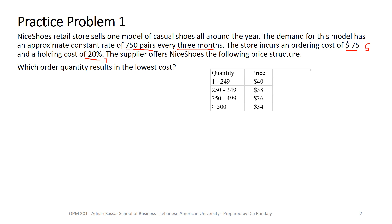This is an EOQ model with quantity discounts, where we can no longer neglect the purchase price — it becomes a relevant cost. Since the carrying cost is given as a percentage, we need to find H for every price, because H equals I times C — that's 20% times the corresponding unit cost. So I'm going to add a column to determine H, the unit carrying cost per unit per year, for every price interval.